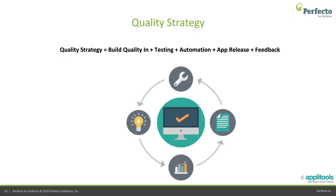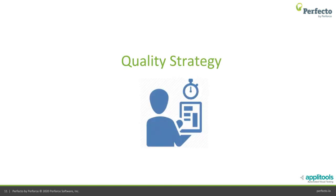Rather than thinking about a test plan, I prefer thinking about a quality strategy for your product — how to build quality inside out. What types of testing activities help build a quality product? How can automation provide good feedback on expected behavior? Especially for native apps, it's extremely important to think about the release strategy and how to measure feedback from what you've released, because native app release cycles are very different from web.